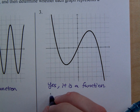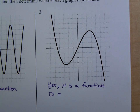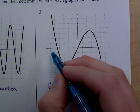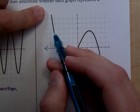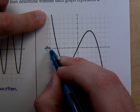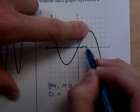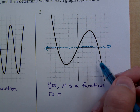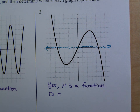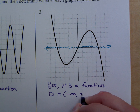What about the domain? If I were to trace along the x-axis, this graph goes all the way to the left, then goes down, goes up, and keeps going down. That includes everything — there's no skipping, there are no breaks. So this is again all real numbers.